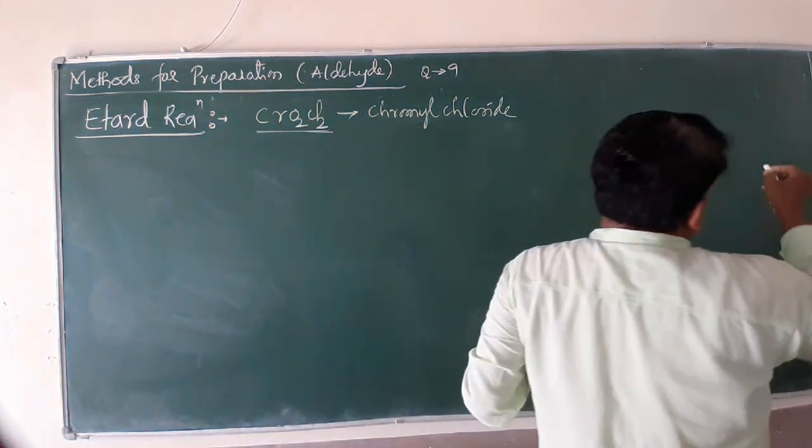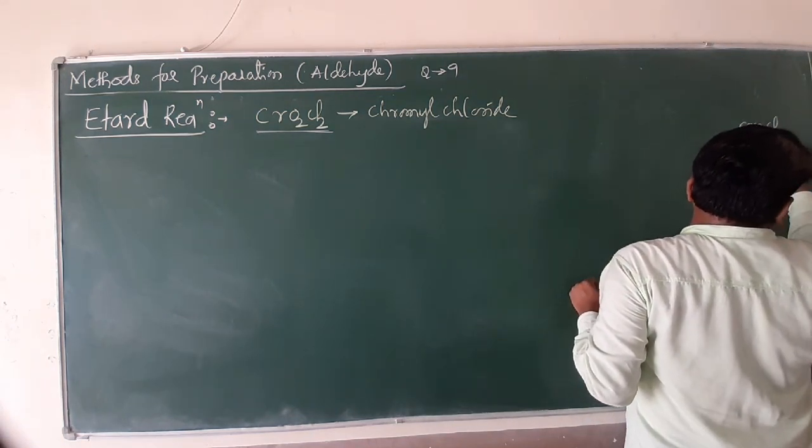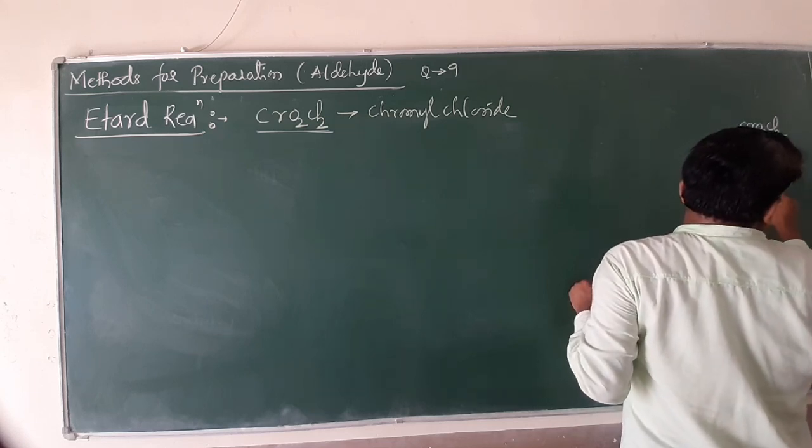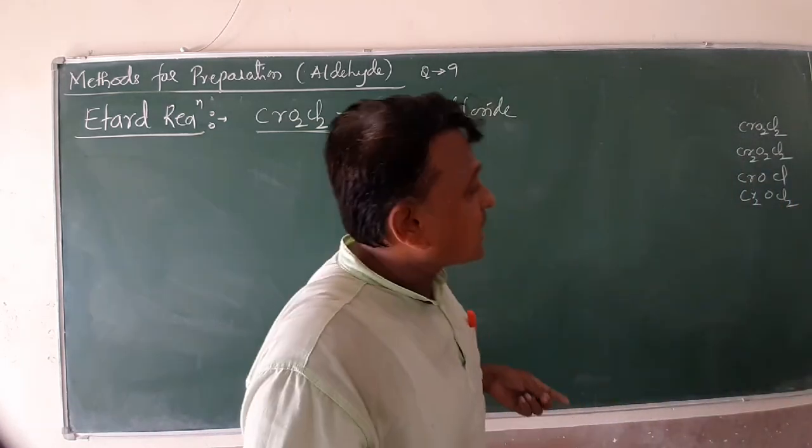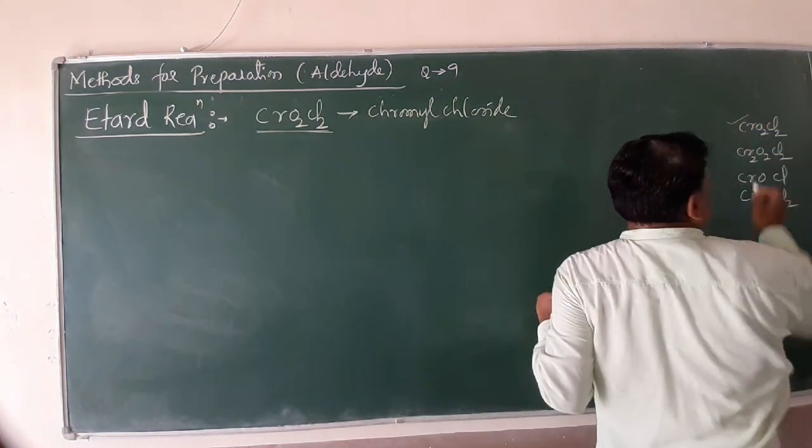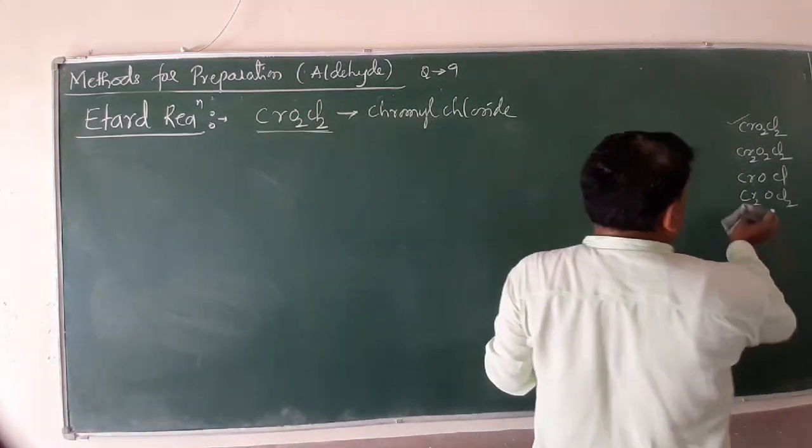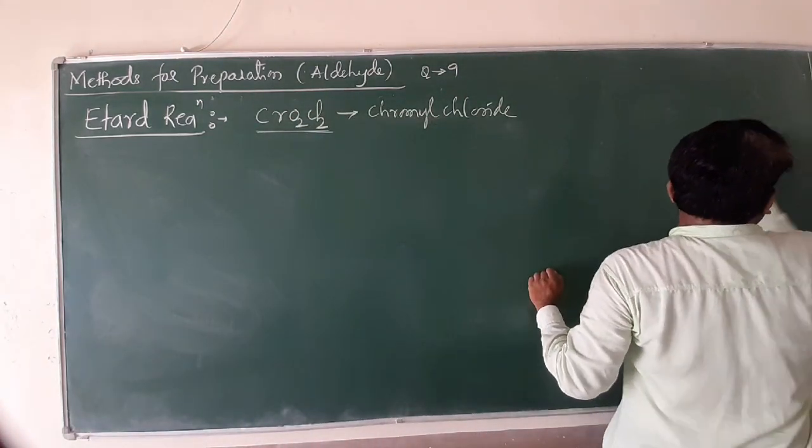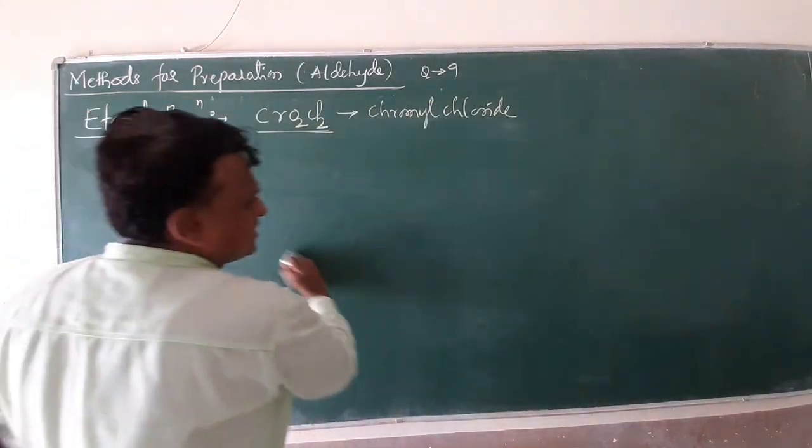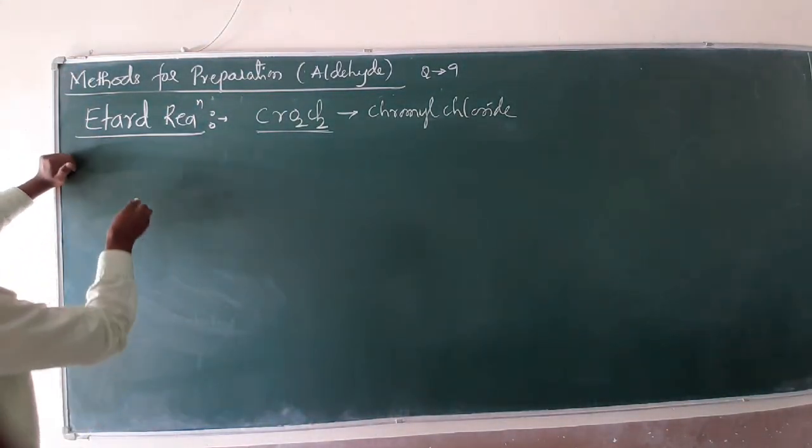But in competitive phase, they ask like this: CrO2Cl2, CrO2Cl2, CrOCl2, CrOCl2, among these four, which is the correct answer for chromyl chloride gas? I think all of you keep in your mind the first one is the correct answer: CrO2Cl2. These are the different options they provided you in your competitive examination. Just don't bother with that reaction. How to prepare aldehyde from Etard? Very wonderful Etard reaction.